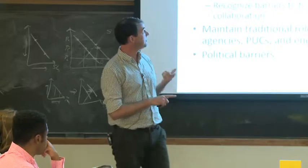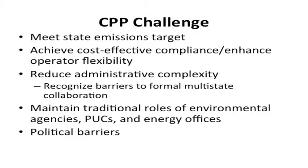What's the state trying to do? Meet the state emissions targets. Achieve cost-effective compliance. Reducing administrative complexity. One of the concerns that state environmental regulators have is they don't want to be deciding what the electricity sector is going to be looking like. That's not their area of expertise. They want to be the environmental regulator. So how can they create a rule that leaves the choices to the power sector so the environmental regulators are setting the general guidelines but not determining exactly what this sector is going to look like going forward? Then, of course, there are a lot of political barriers. I don't think we need to spend time on that.